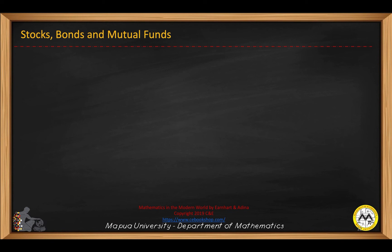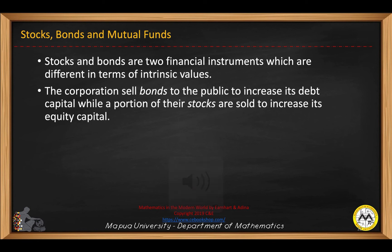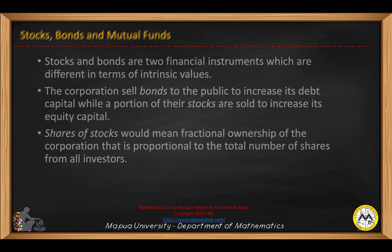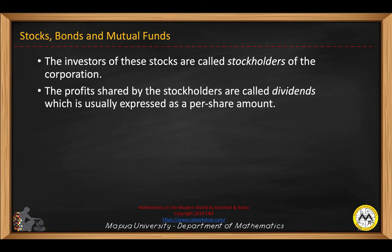Now we go to stocks, bonds, and mutual funds. Stocks and bonds are two financial instruments which are different in terms of intrinsic values. Corporations sell bonds to the public to increase their debt capital, while a portion of their stocks are sold to increase equity capital. Shares of stocks represent fractional ownership of the corporation, proportional to the number of shares from all investors. The investors of these stocks are called stockholders, and the profits shared by the stockholders are called dividends, usually expressed as a per-share amount.